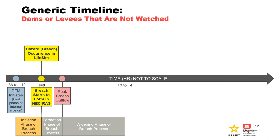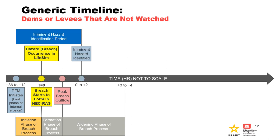This slide illustrates the differences in the timeline for an internal erosion failure mode for a dam or levee that is not watched — in other words, no eyes on the dam or levee. This often occurs for dams that are not staffed and the public is not nearby to detect a developing failure mode, or levees that are not being inspected or flood fought during an event. There is no intervention like the previous example. A key difference is that the imminent hazard identification likely occurs after the breach has formed and reports of flooding start to appear downstream of the dam or within the levied area. It typically occurs 0 to plus 2 hours after the breach starts to form, and in this example it is shown after the peak breach outflow is released.